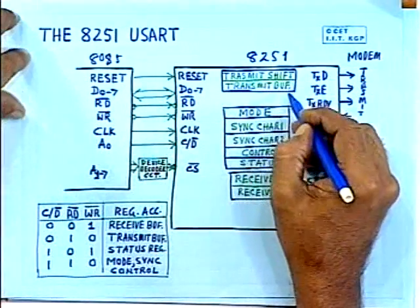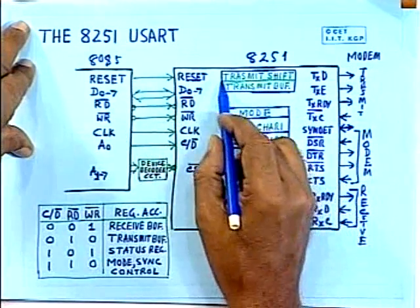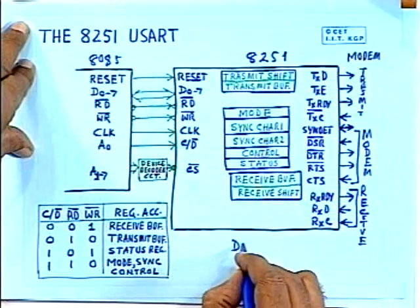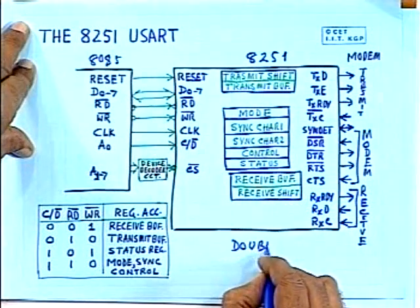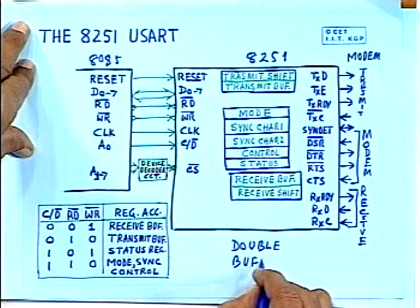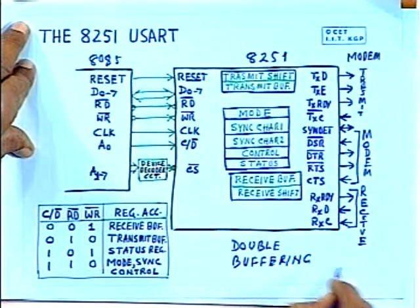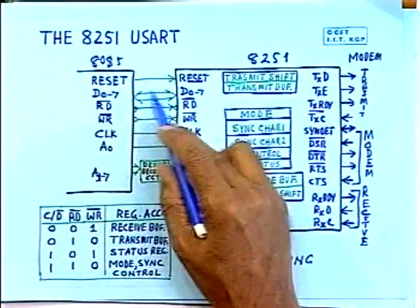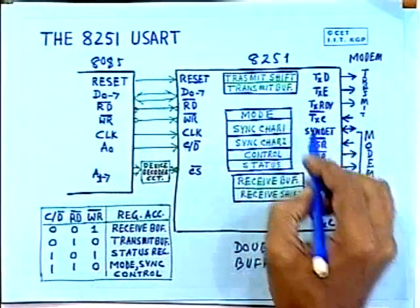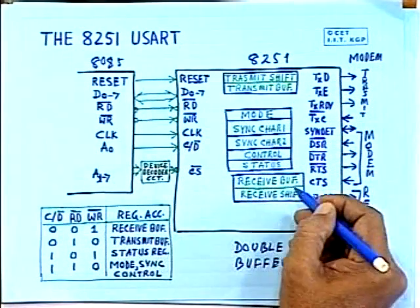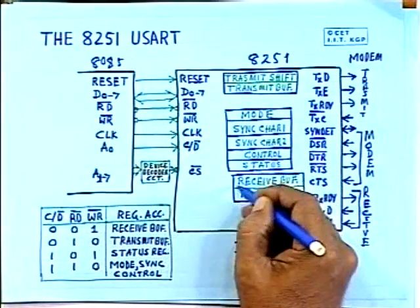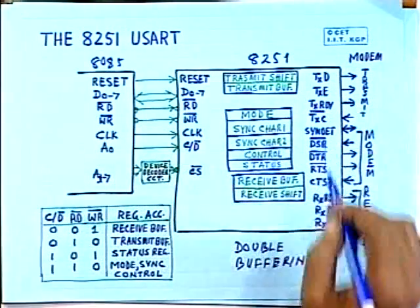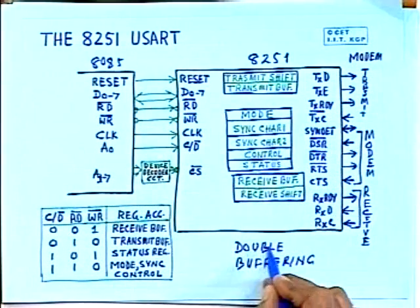This concept of using two registers for transmit as well as receive is known as double buffering. The advantage is that whenever transmission is going on, you can write another byte of data into the transmit buffer. Similarly, when receiving is going on, the already-received data in the receive buffer can be read by the microprocessor. Both operations can be performed in parallel because of double buffering.